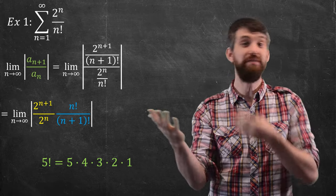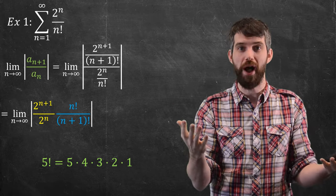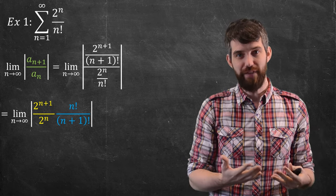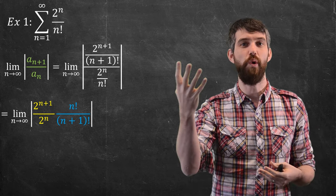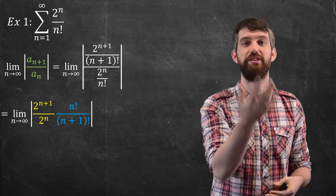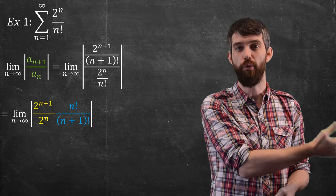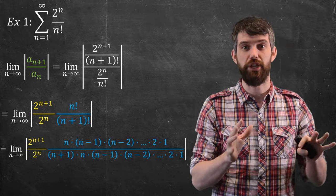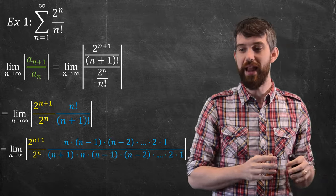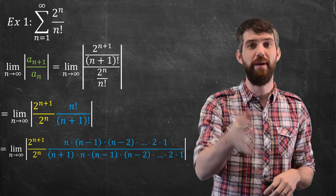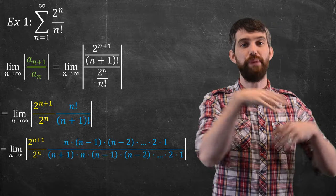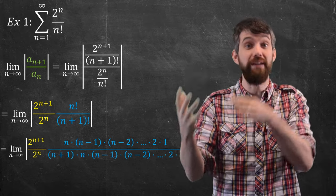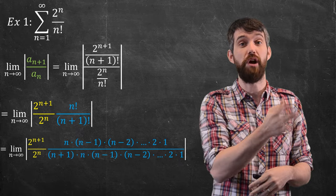Recall that 5 factorial is 5 times 4 times 3 times 2 times 1 — multiplying all the integers down to 1. So n factorial is n times (n−1) times (n−2) times ··· times 3 times 2 times 1. And (n+1) factorial expands as (n+1) times n times (n−1) times (n−2) times ··· times 3 times 2 times 1. Most of those cancel — the only thing in the denominator that doesn't cancel is that single (n+1).